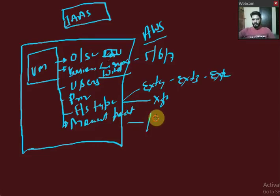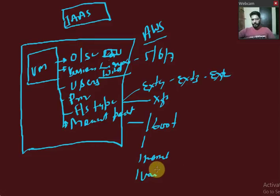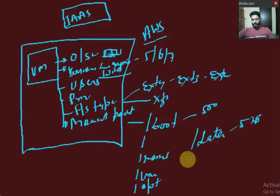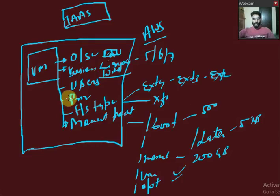If you know the file system type, then you should also know how many mount points there are — that could be /boot, /, /home, /var, /opt, /data, and so on. You should know the sizes: /boot could be 500 MB, /data could be 5 TB, /home could be 200 GB, and so forth. Then you should know what services are running.